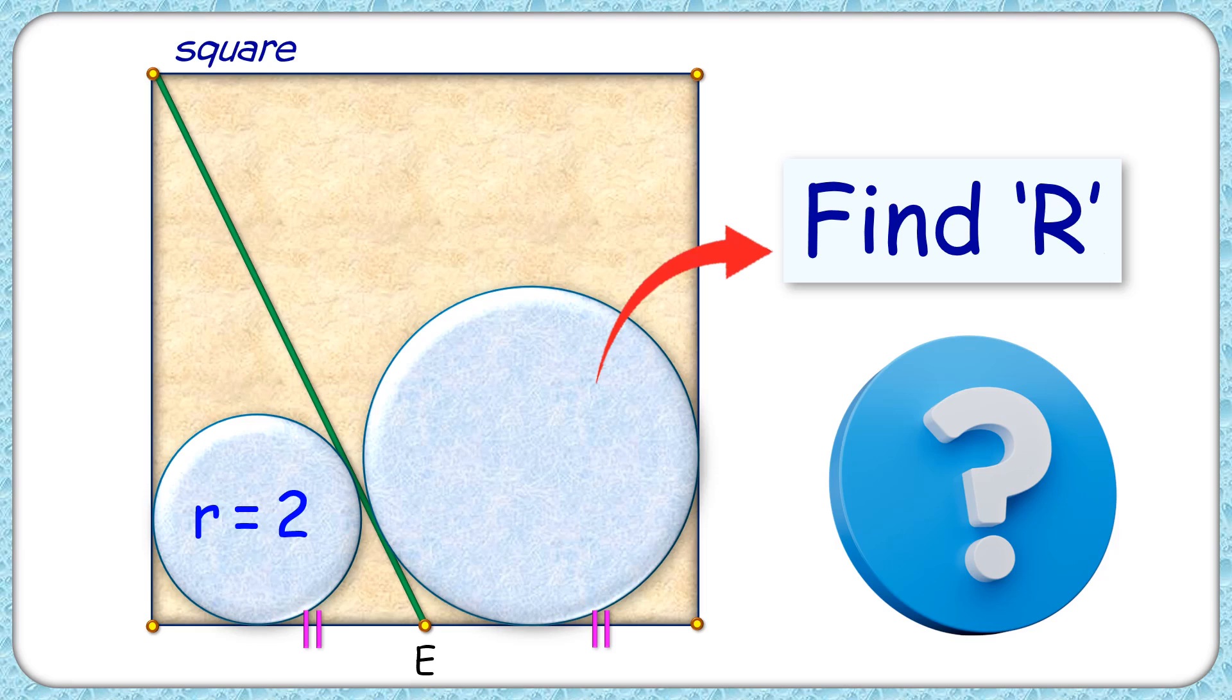In this interesting question, given is a square. A line segment is drawn from the vertex to the midpoint of the opposite side. The radius of this incircle is 2 centimeters. The exciting part is with this limited data, we have to find the radius of this second circle.